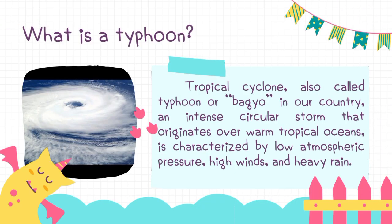What is a typhoon? A tropical cyclone, also called typhoon or bagyo in our country, is an intense circular storm that originates over tropical warm ocean waters. It is characterized by low atmospheric pressure, high winds, and heavy rain.